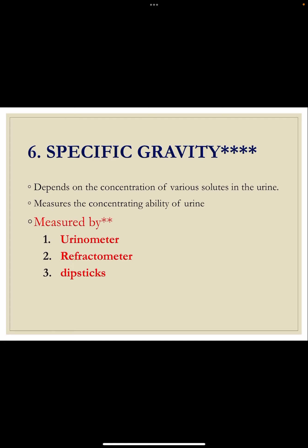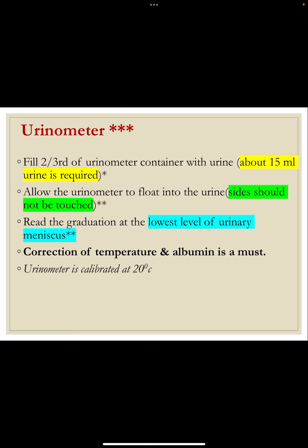Specific gravity depends on the concentration of various solutes — more solutes means higher specific gravity. It measures the concentrating ability of the kidney. It is measured by the urinometer, refractometer, or dipstick method. In the urinometer, two-thirds of the urinometer cylinder is filled with urine. Minimum 15 ml of urine is required. The urinometer should float freely without touching the sides of the container. We measure the lowest level of the meniscus — this is an important precaution asked as a viva question. The urinometer is calibrated at 20 degrees Celsius, so temperature correction must be applied.